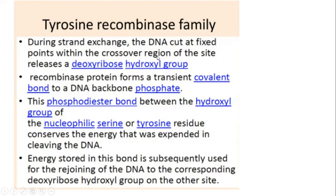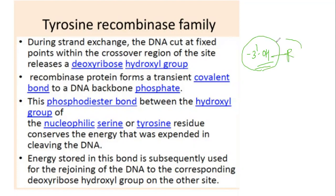Let's talk about the tyrosine recombinase family. During strand exchange, the DNA is cut at fixed points within the crossover region, generating a free 3'-OH group. The recombinase protein forms a transient covalent bond to this 3'-OH. This phosphodiester bond between the hydroxyl group of the nucleophilic tyrosine residue reserves the energy expended in cleaving the DNA.